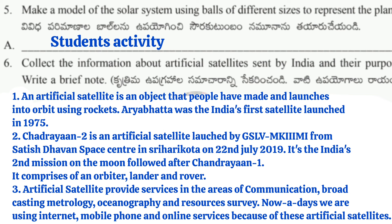Chandrayaan-2 is India's second mission on the moon, following Chandrayaan-1. It comprises an orbiter, lander, and rover. Third point: Artificial satellites provide services in communication, broadcasting, meteorology, oceanography, and resource survey. Today we use internet, mobile phones, and online services because of these artificial satellites.